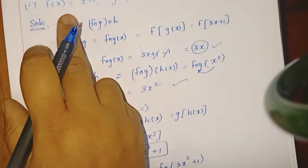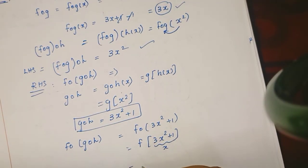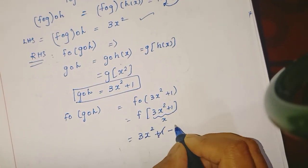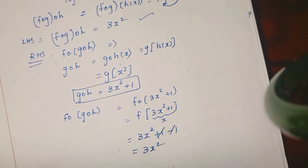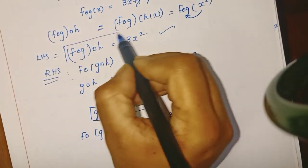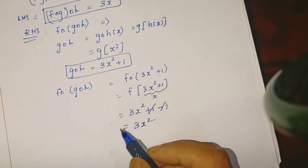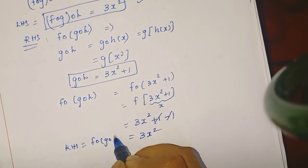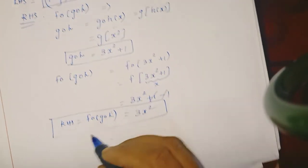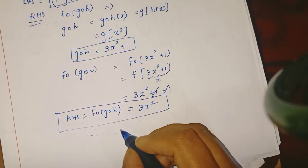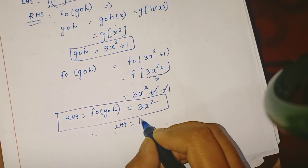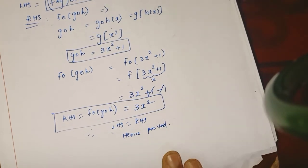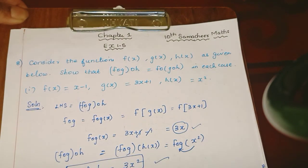3x squared plus 1, and then applying f — the minus 1 cancels — giving 3x squared. This equals f composition g composition h equals 3x squared. Therefore, LHS is equal to RHS. Hence proved. This is the correct answer. It will be easier. Thank you, students.